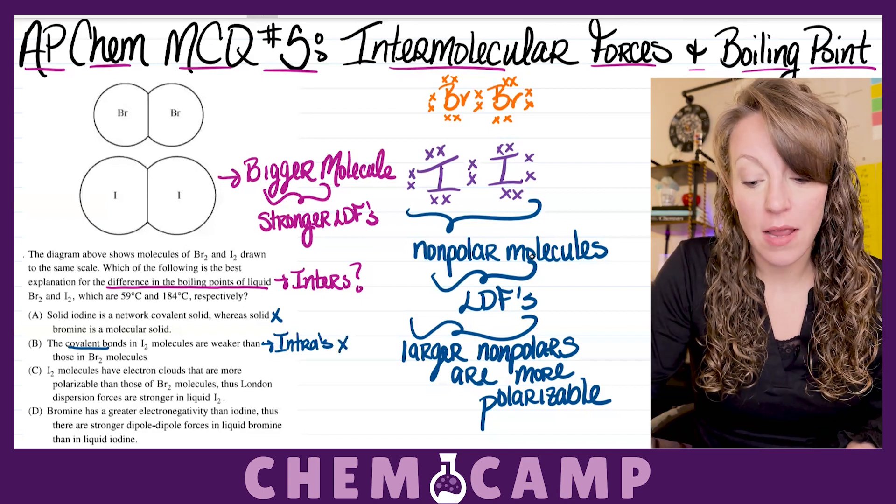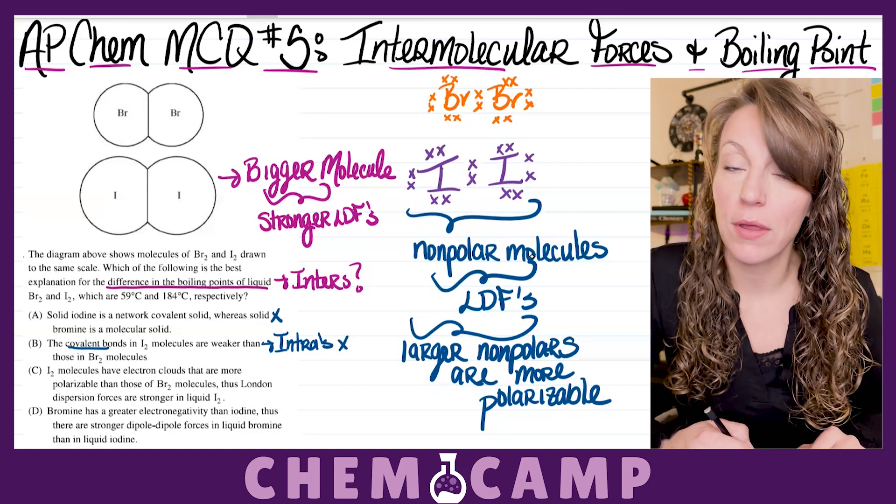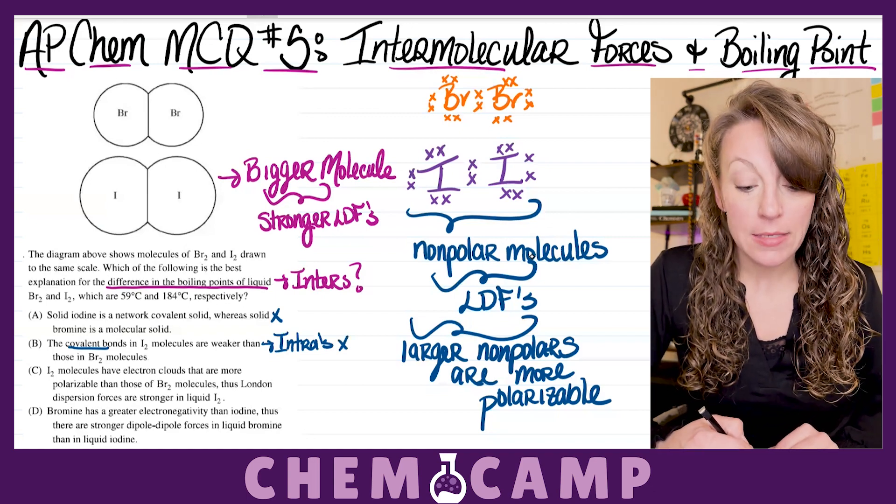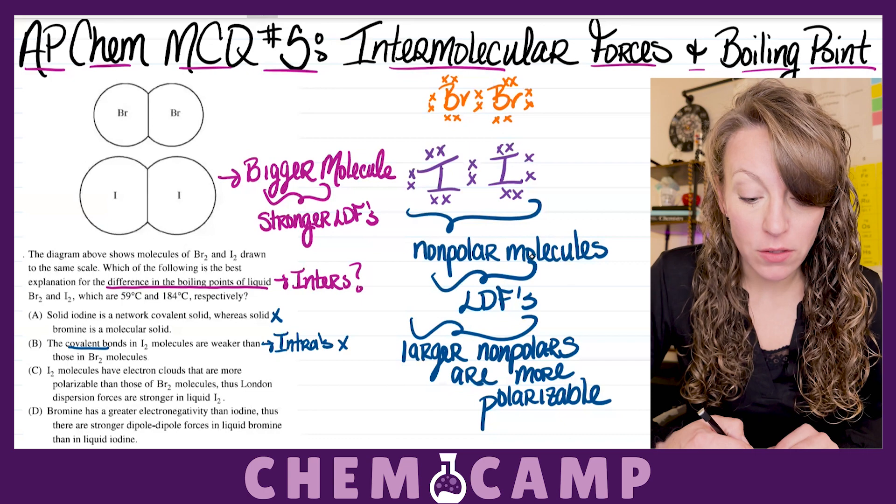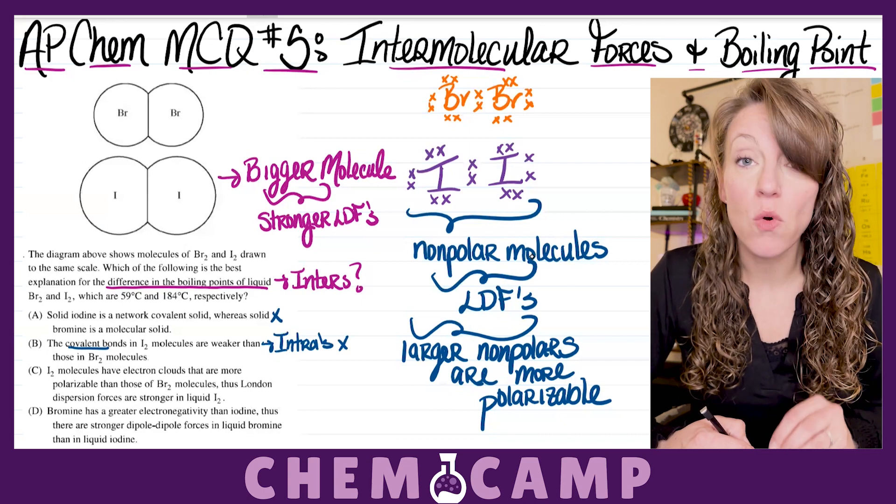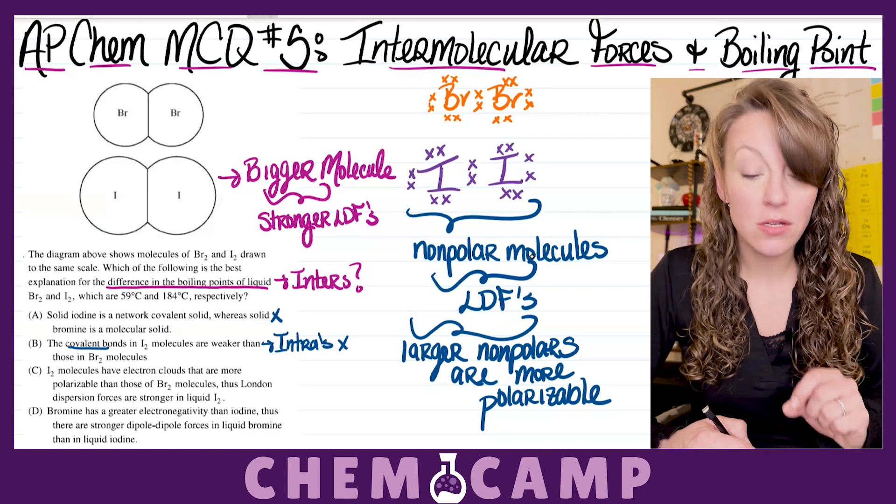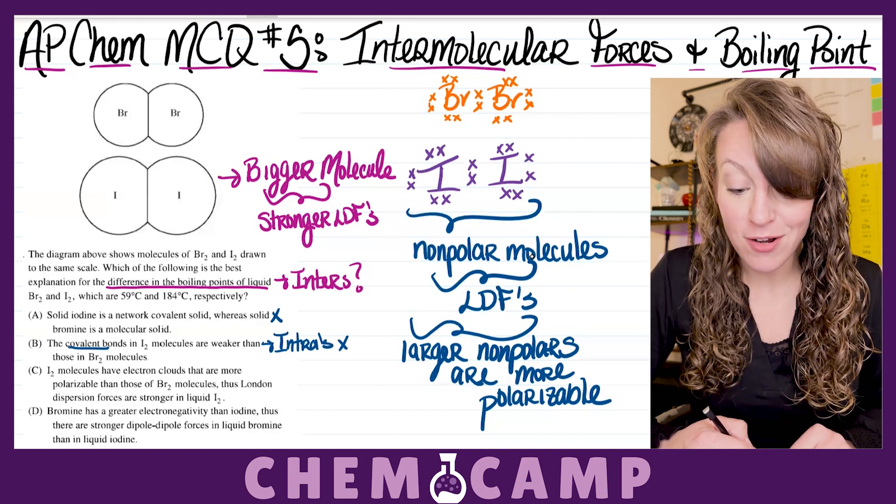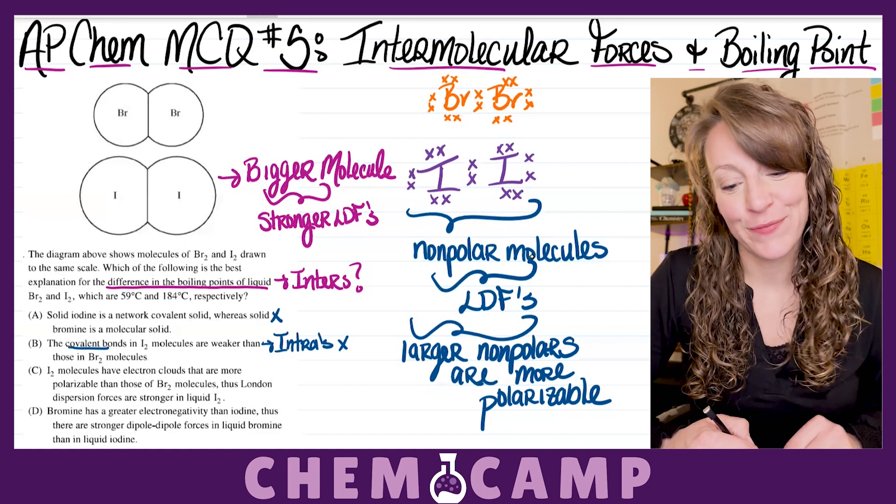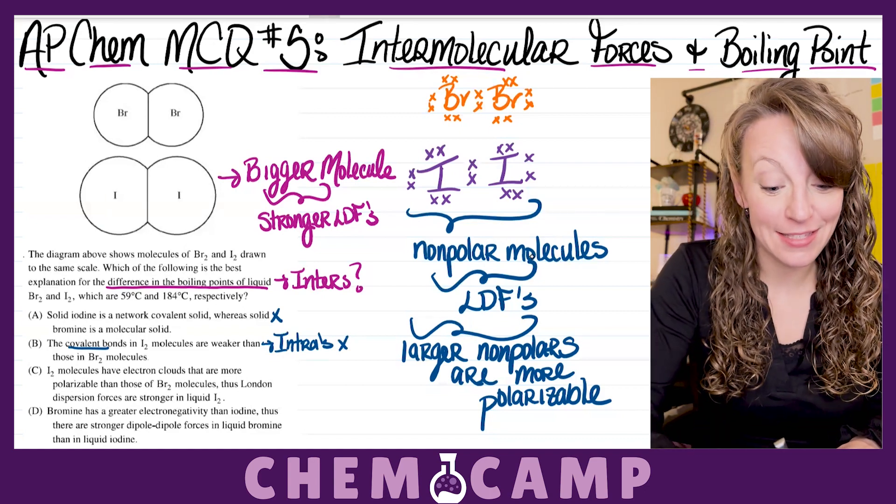So, intras are never broken at your boiling or melting point. C states I2 molecules have electron clouds that are more polarizable than those of Br2 molecules. Thus, London dispersion forces are stronger in liquid I2. Well, I really like that answer.